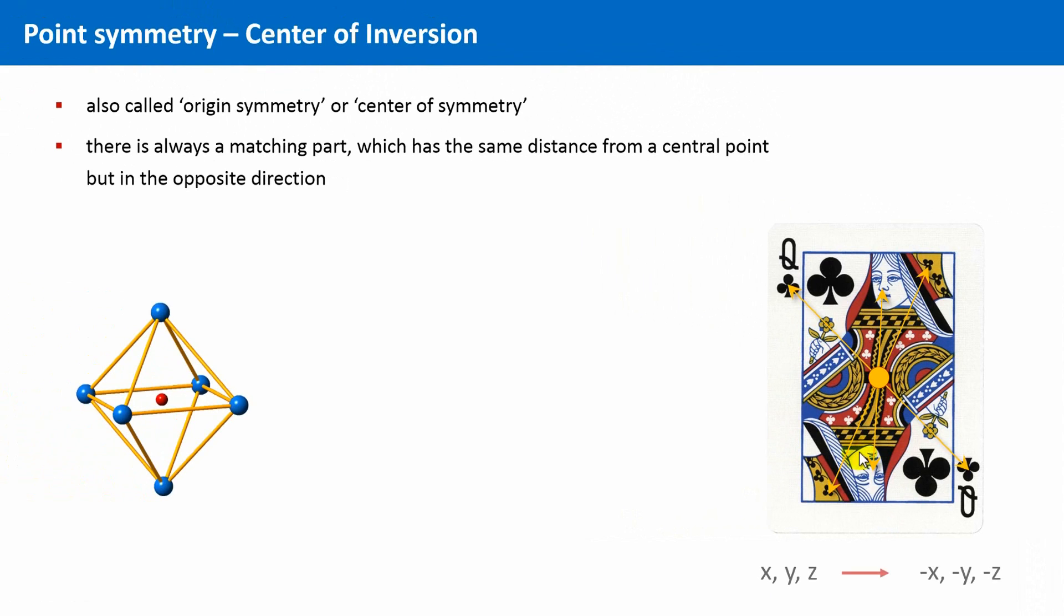This means if we have a point at the coordinates x, y, and z, then there must also be a point of the exact opposite coordinate minus x, minus y, and minus z. And not only any arbitrary point, but this exact point of the same color, nature, specification and so on.